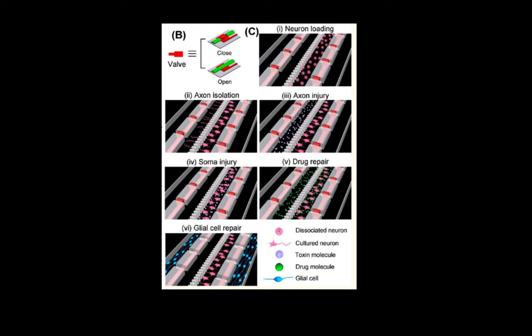Here, we see the several different options that researchers have when using a microfluidic device setup. They can separate the cell body portion of a neuron from the axon and dendrites, and then test different manipulations on different parts, observing the resulting changes in other parts of the neuron — whether that's introducing toxins, a different drug, dissociating the neurons, physical changes, or severing the axons. The possibilities are really endless.